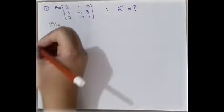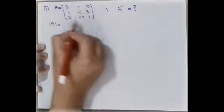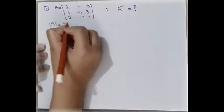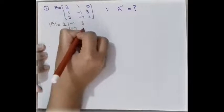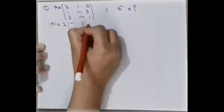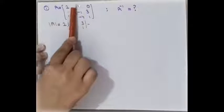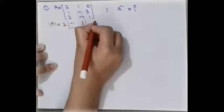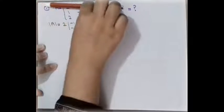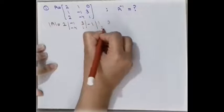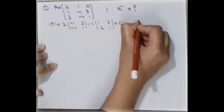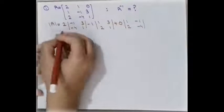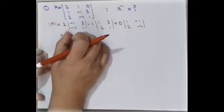The first step is to calculate the determinant. As already discussed, I expand along the first row. Taking the first element, I remove its corresponding row and column, leaving four elements: -1, 3, -4, 1. The signs alternate starting with plus. For the second element, which is 1, removing the corresponding row and column leaves 1, 3, 2, 1. For the third element, 0, removing the row and column leaves 1, -1, 2, -4.